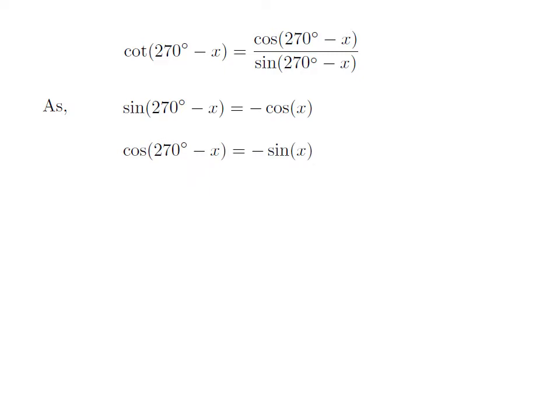We also know the trigonometric identity: cosine of 270 degrees minus x is equal to minus sine of x. The proof of this identity has been explained in the video appearing in the upper right corner, and the URL has been mentioned in the description section as well.